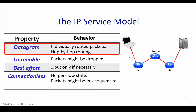First, IP is a datagram service. When we ask IP to send some data for us, it creates a datagram and puts our data inside. The datagram is a packet that is routed individually through the network based on the information in its header. In other words, the datagram is self-contained. The header contains the IP destination address, which we abbreviate as IPDA, and the IP source address, or IPSA, saying where the packet came from, so the receiver knows where to send any response.